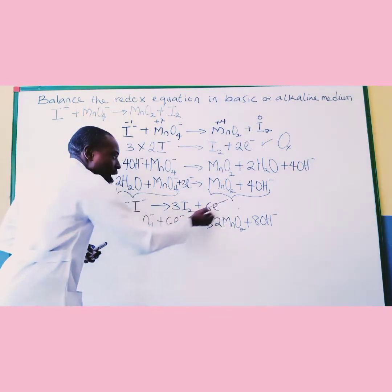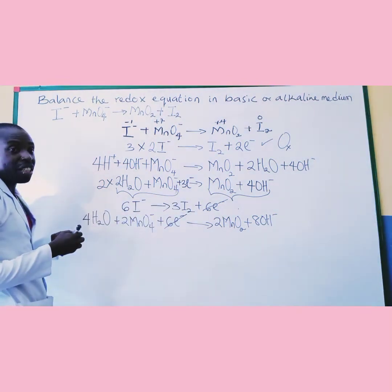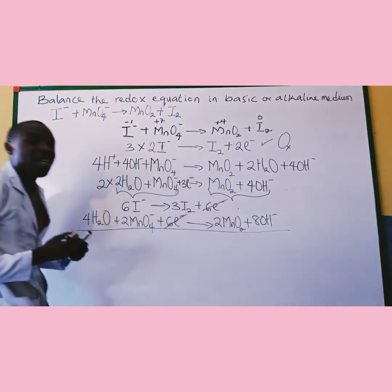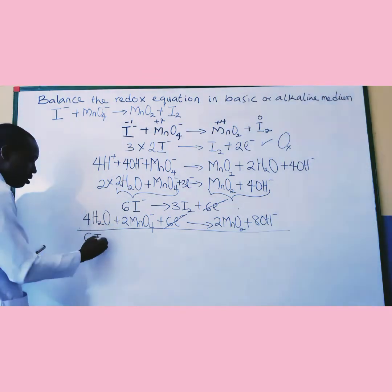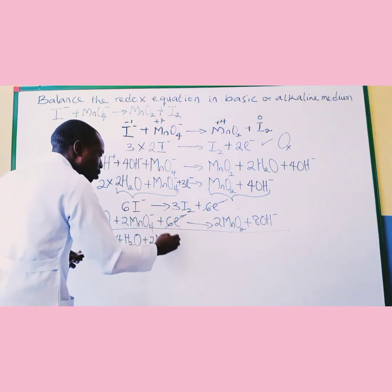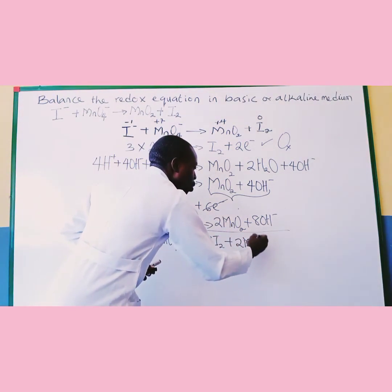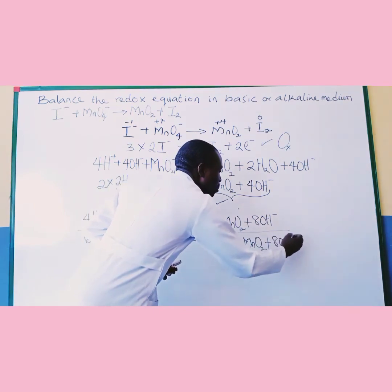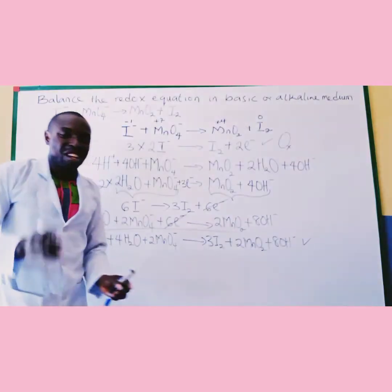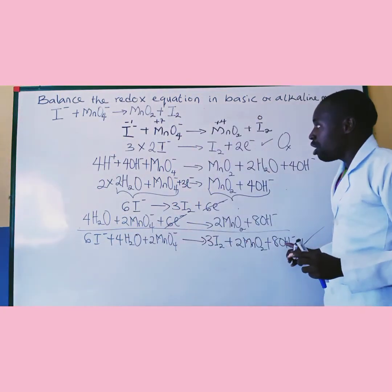Now I cancel the electrons on both sides of the half-oxidation and half-reduction. I can then add them together comfortably. So the final balanced equation becomes: 6I⁻ + 2MnO4⁻ + 4H2O → 3I2 + 2MnO2 + 8OH⁻. That gives us the balanced redox reaction, as you can see right here on the board.